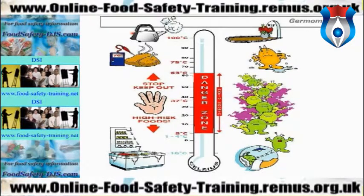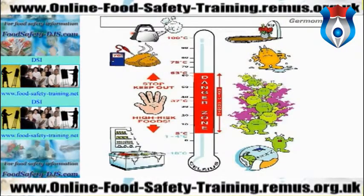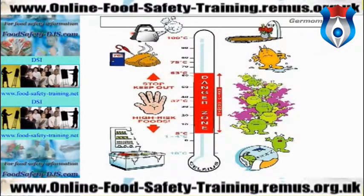At minus 18 degrees Celsius or lower, bacteria will remain dormant — you won't kill them by freezing, but they won't multiply. The next major temperature range is chiller or fridge temperatures: 1 to 4 degrees Celsius. With a couple of exceptions, bacteria will not multiply at these temperatures — they will remain dormant.